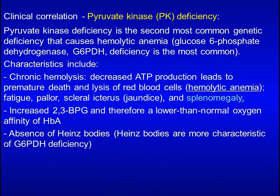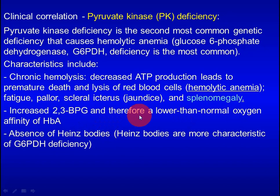Pyruvate kinase deficiency is the second most common genetic deficiency that causes hemolytic anemia, after G6PD deficiency. Characteristics include chronic hemolysis, increased 2,3-BPG in the blood, and absence of Heinz bodies. Hemolysis is caused by reduced ATP production, and one direct outcome is splenomegaly. Increased 2,3-BPG decreases the oxygen-binding affinity of hemoglobin.